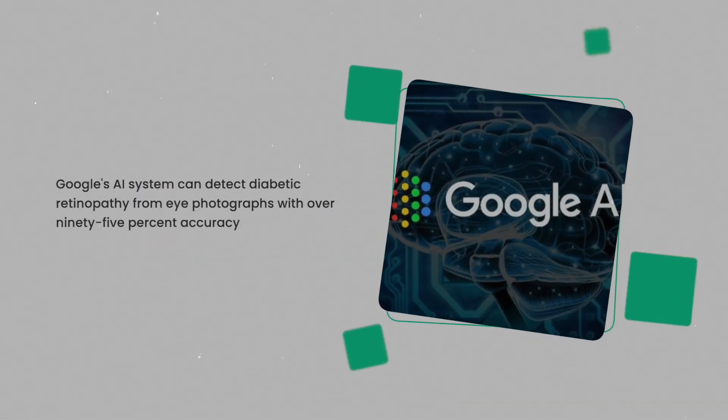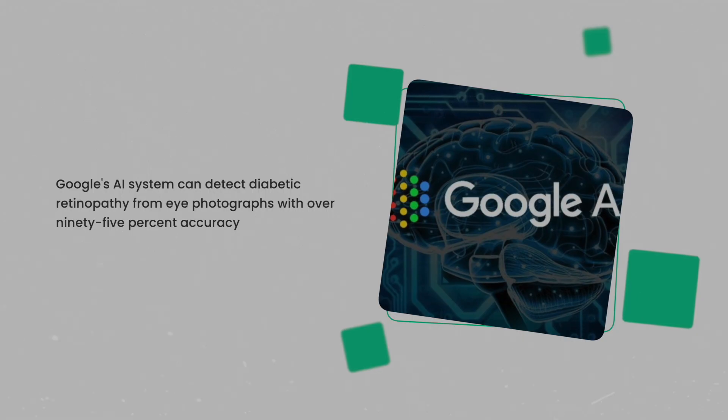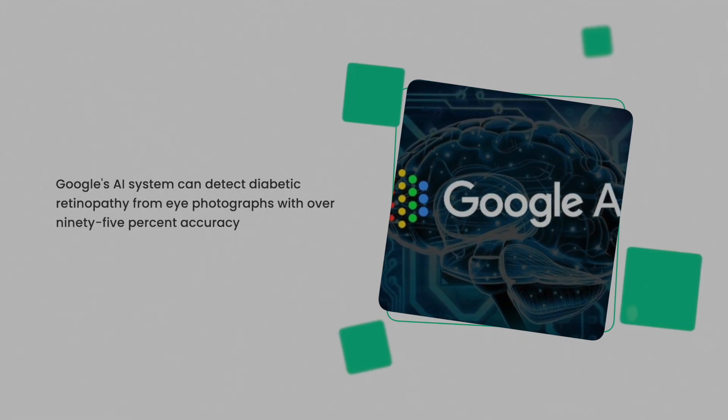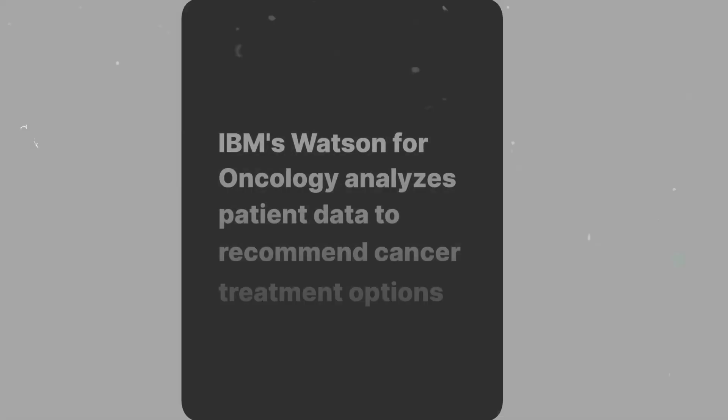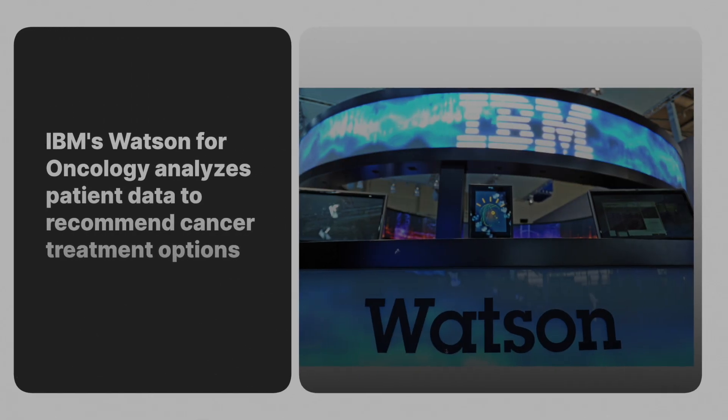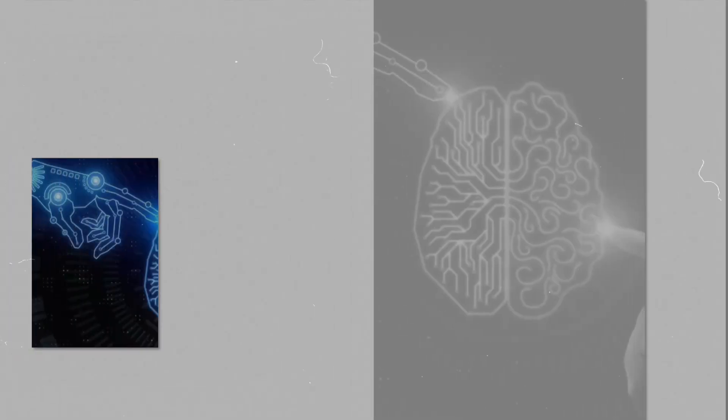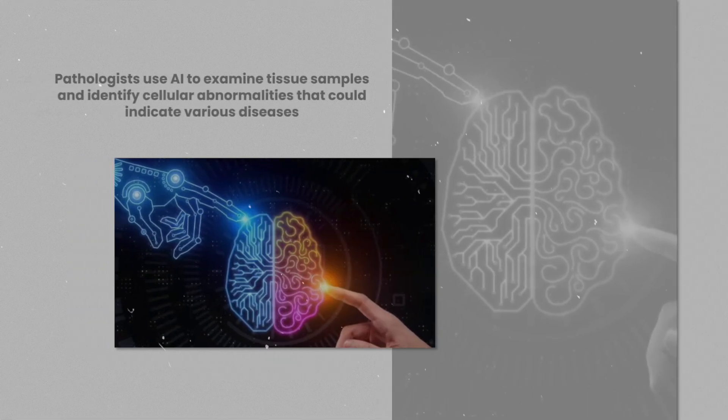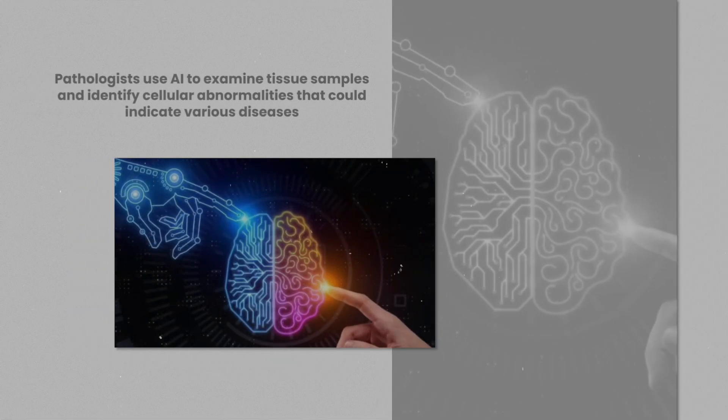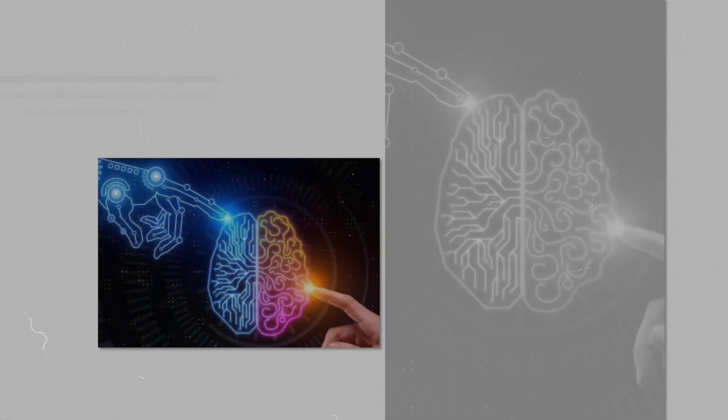Google's AI system can detect diabetic retinopathy from eye photographs with over 95 percent accuracy. IBM's Watson for Oncology analyzes patient data to recommend cancer treatment options. Pathologists use AI to examine tissue samples and identify cellular abnormalities that could indicate various diseases.